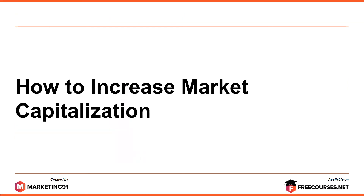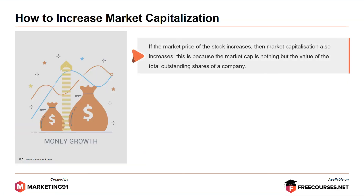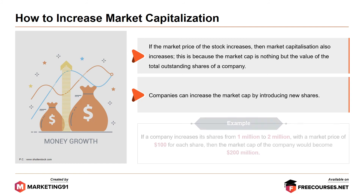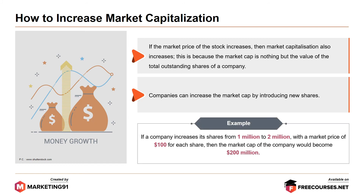How to increase market capitalization? There are two ways through which companies can increase their market capitalization. First, if the market price of the stock increases, then the market capitalization also increases, since market cap is the value of the total outstanding shares of a company. Next, companies can increase market cap by introducing new shares. Example: if a company increases its shares from 1 million to 2 million with a market price of $100 per share, then the market cap would become $200 million.